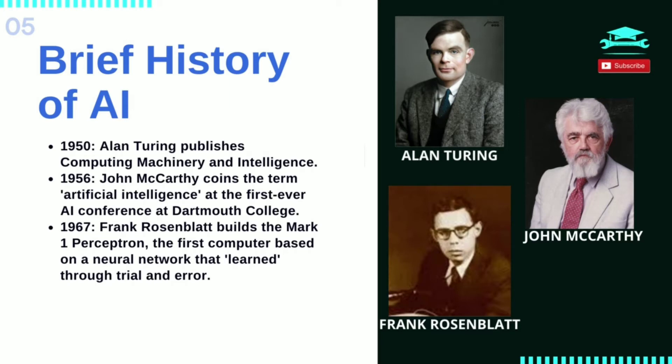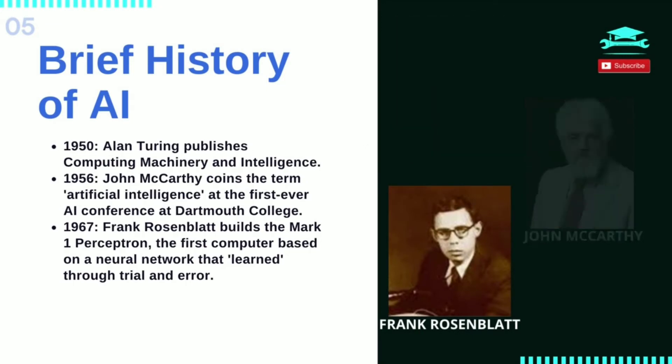In 1967, Frank Rosenblatt built the Mark 1 Perceptron, the first computer based on a neural network that learned by trial and error. Just a year later, Marvin Minsky and Seymour Papert published a book titled Perceptrons, which became both a landmark work on neural networks and, at least for a while, an argument against future neural network research projects.